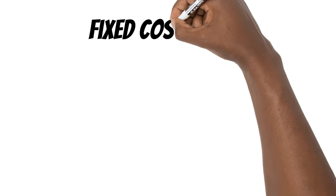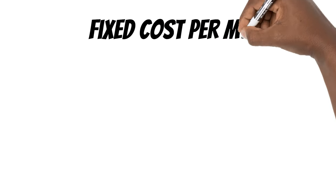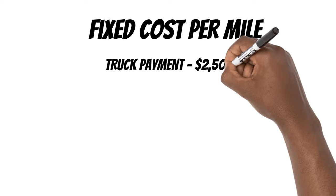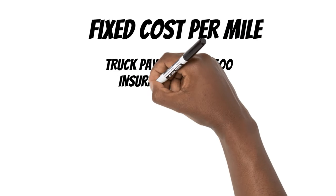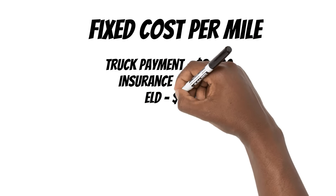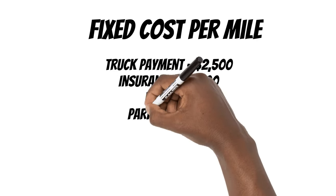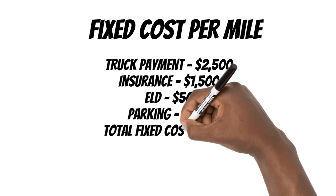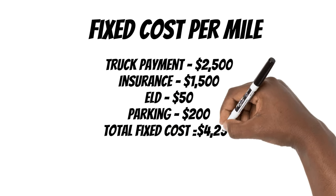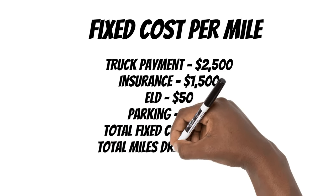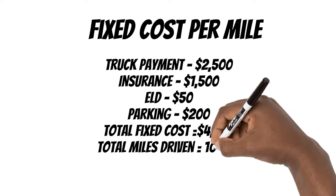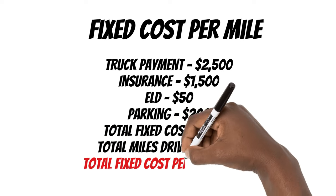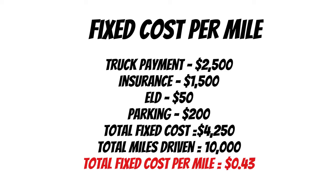Now that we've determined our fixed costs, we need to determine our fixed costs per mile. Since we have the total number for our fixed costs, we're going to divide that by the total amount of miles driven for the month. In this example, we're using 10,000 miles, so the total fixed cost would be 43 cents per mile.